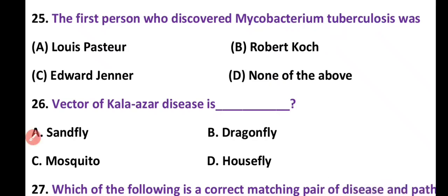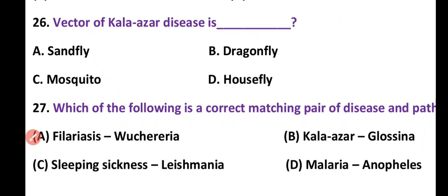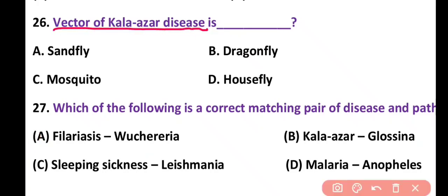Question 26. Vector of Kala-azar disease is: sand fly, dragonfly, mosquito, or house fly. Correct answer is option A. Vector of Kala-azar disease is Phlebotomus, the sand fly.